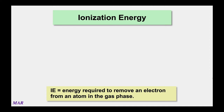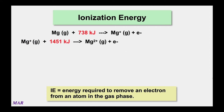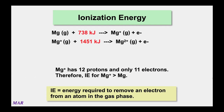Ionization energies are always positive numbers — removing electrons is an endothermic process. To remove the outermost electron from a magnesium atom requires 738 kJ/mol — the first ionization energy. In an endothermic reaction, you write energy as a reactant. Notice that Mg⁺ is a little smaller than neutral magnesium because you have one fewer electron; those protons hold on tighter.